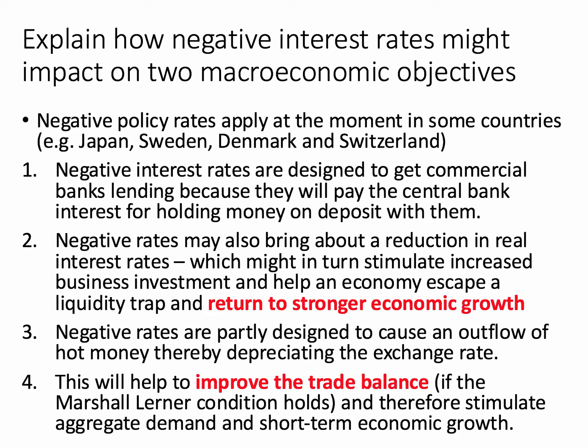Question two: explain how negative interest rates might impact on two macro objectives. We've just seen that negative policy interest rates apply at the moment in some countries, particularly Japan, Switzerland, and also Sweden and Denmark. Negative interest rates are really designed to get commercial banks to lend more, because with negative interest rates, if they hold money in the central bank, they'll have to pay interest just for holding money on deposit. So it's designed to incentivise commercial banks to reduce those balances and lend out more.